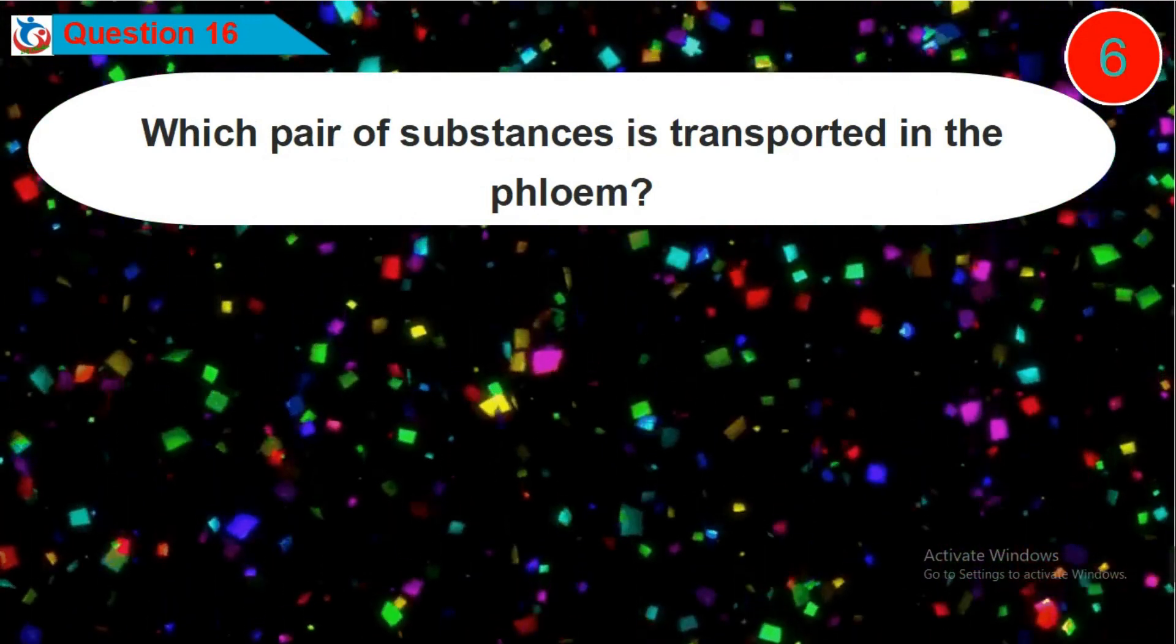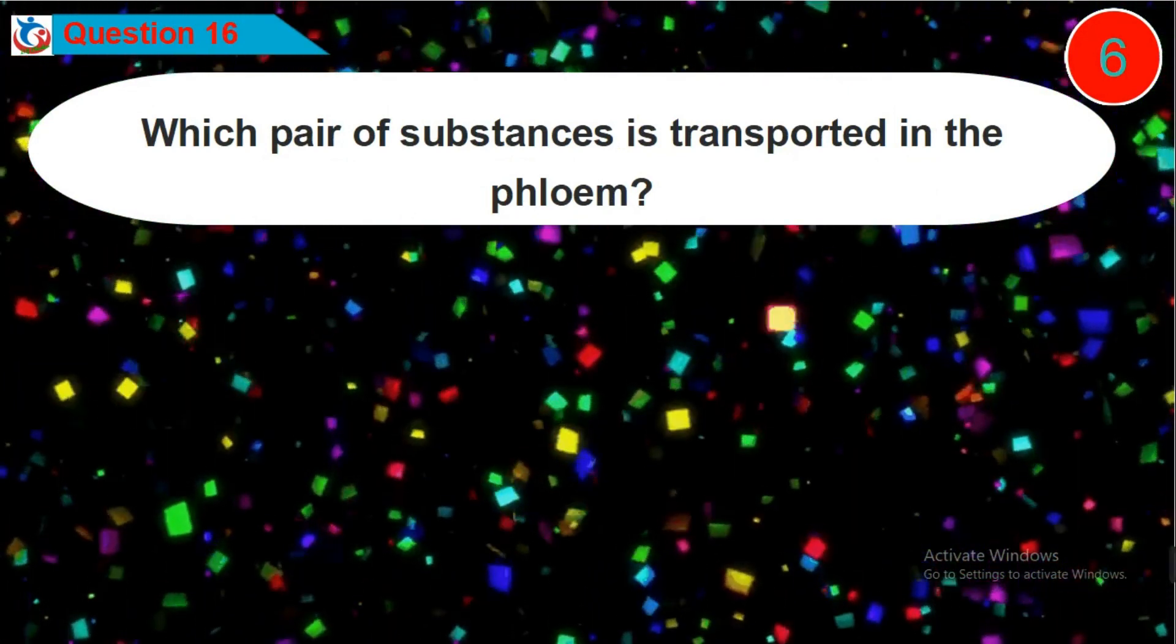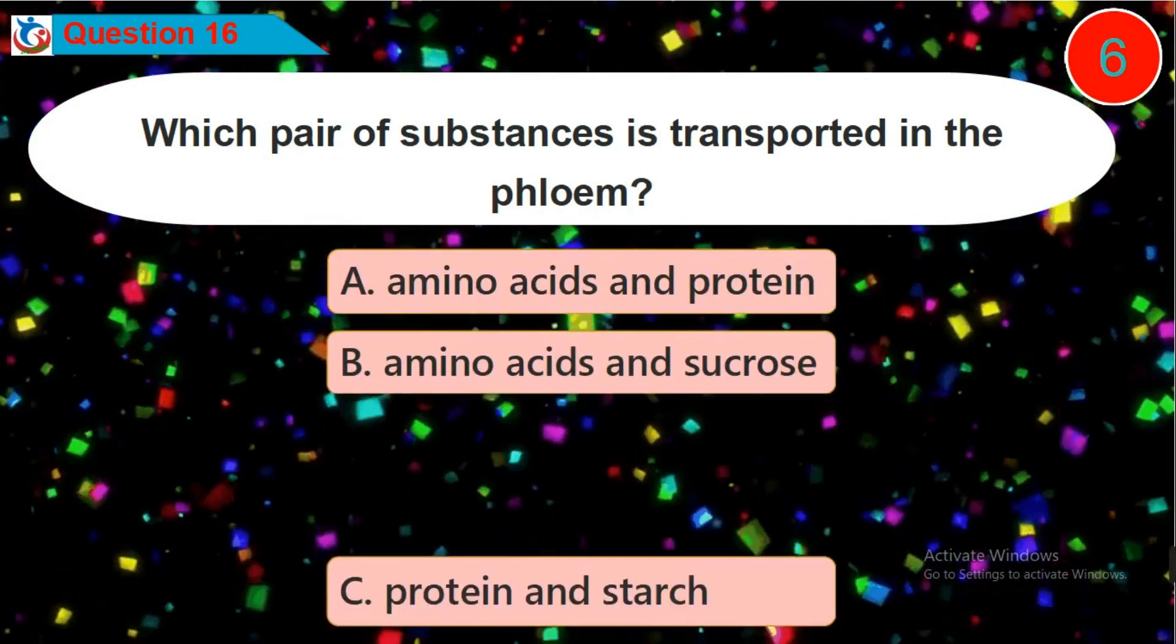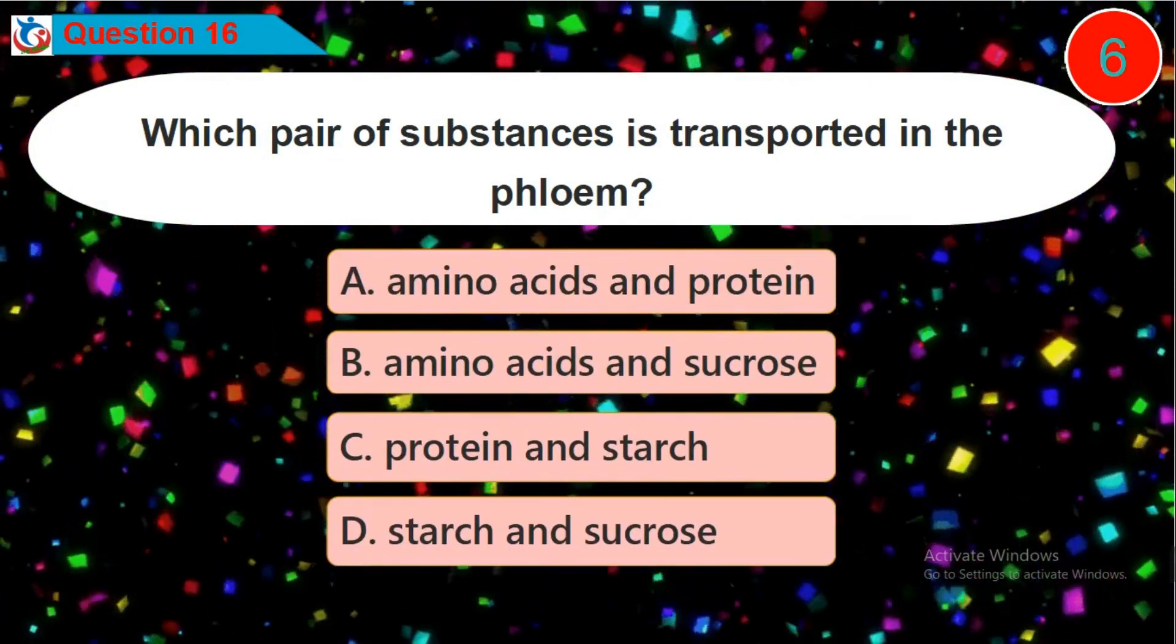Question 16. Which pair of substances is transported in the phloem? Is it option A, B, C or D?